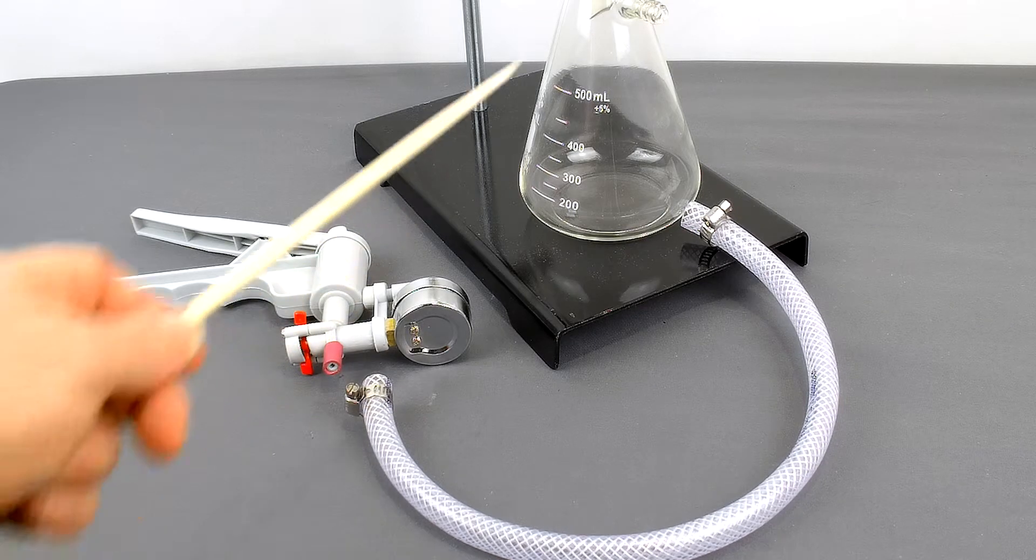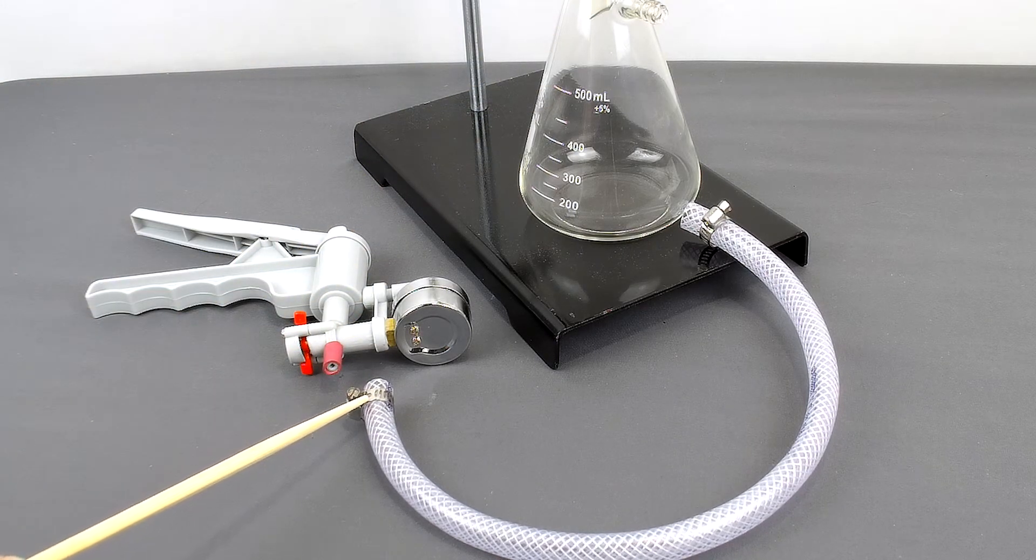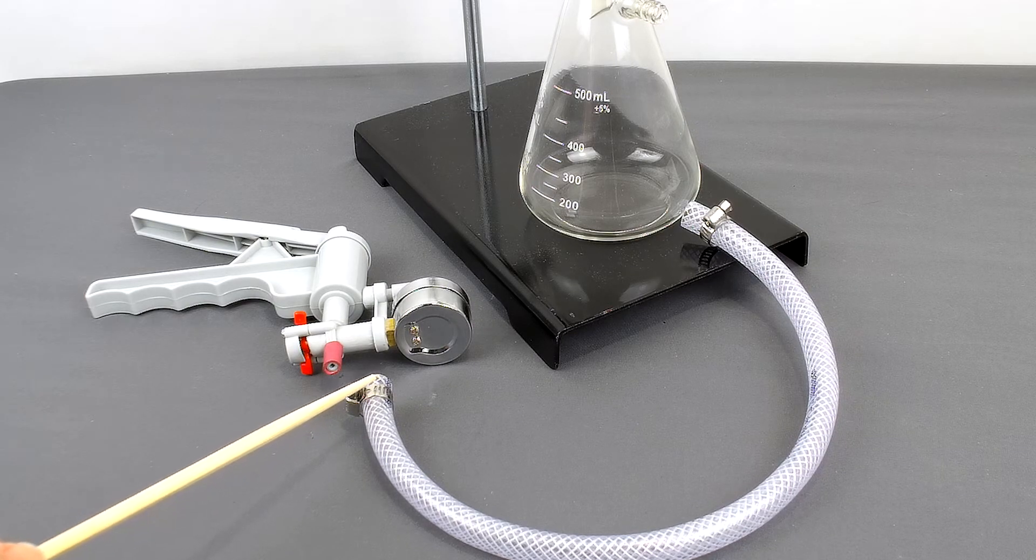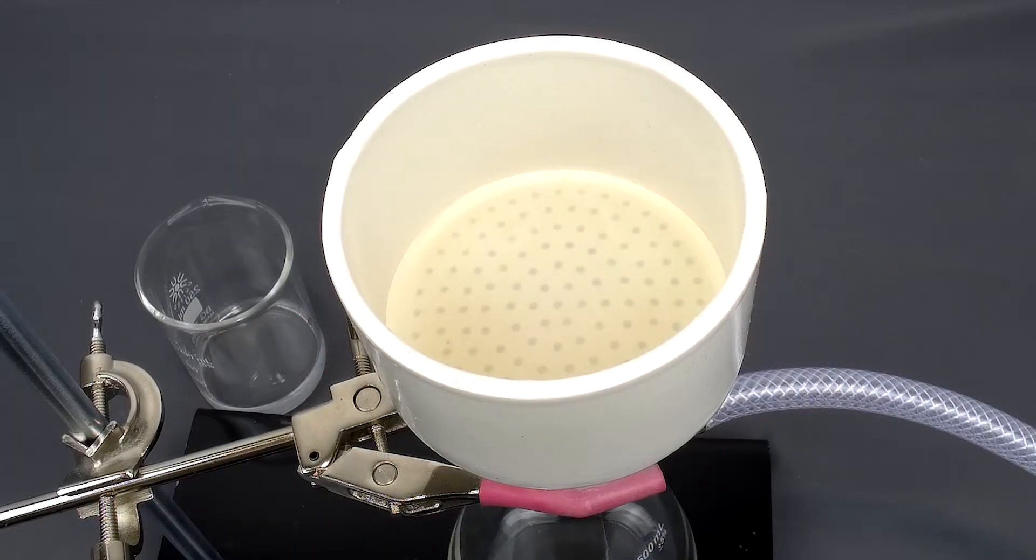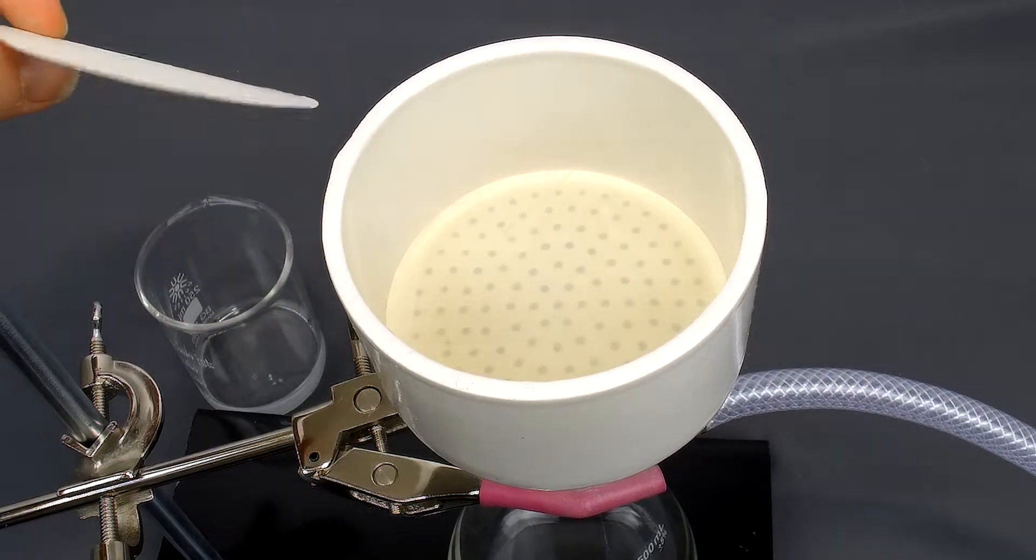The next thing you would do is connect the hose to the hand pump and to the flask. I would always recommend using radiator clamps to make sure that the connection is very snug.